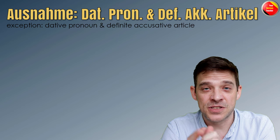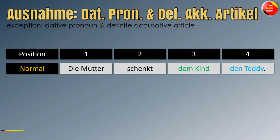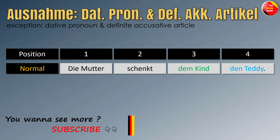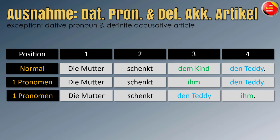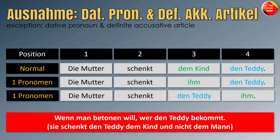Aber auch hier gibt es Ausnahmen — also here there are some exceptions. Die Mutter schenkt dem Kind den Teddy. Now with one pronoun: Die Mutter schenkt ihm den Teddy. That's the rule — the pronoun comes before the noun. But you can also say: Die Mutter schenkt den Teddy ihm. If you have the accusative object with a definite article and the dative object as a pronoun, you can put the accusative object in front of the pronoun — wenn man betonen will, wer den Teddy bekommt — if you want to emphasize who gets the teddy bear.